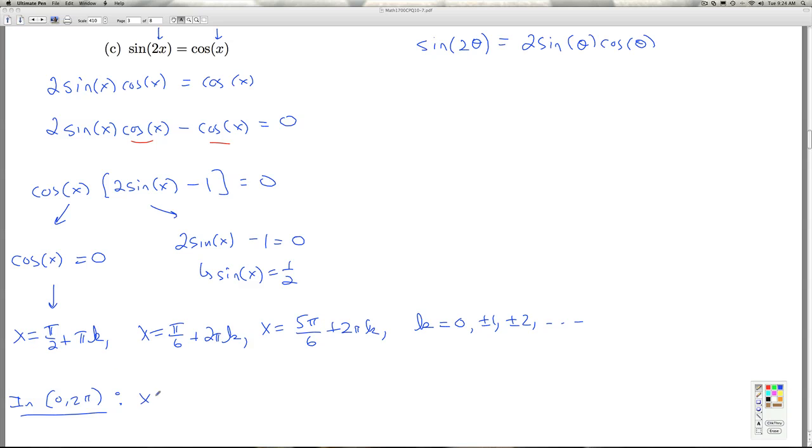So in 0 to 2 pi from the first family, I certainly get the pi over 2 when k equals 0. When k equals 1, I get 3 pi over 2. When k equals 2, 3, 4, 5, I'm getting something bigger than 2 pi. When I let k be a negative, negative 1, negative 2, negative 3, I get something less than 0. So those are the only two answers I get there. And then I get pi over 6, and that's the only one I get from this family. And then 5 pi over 6, the only one I get from that family. So that'll do it then.